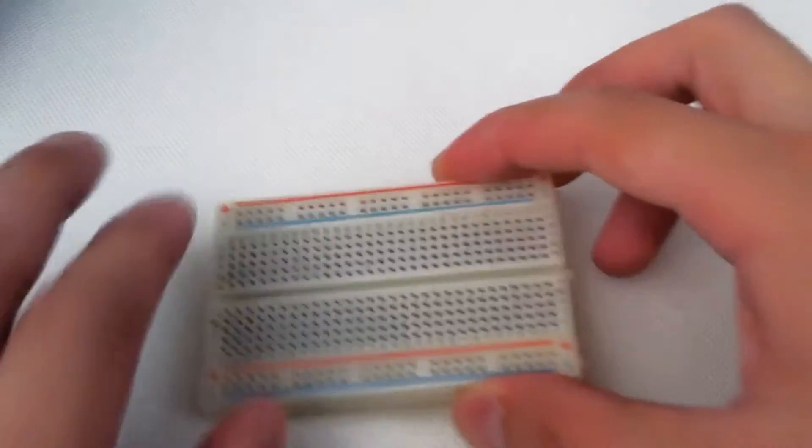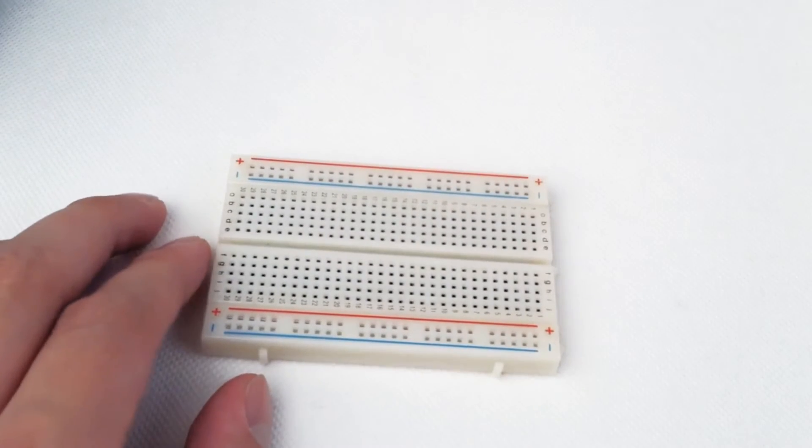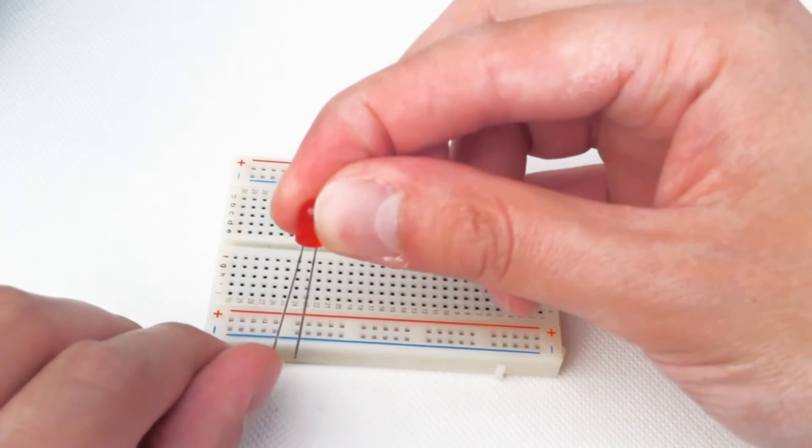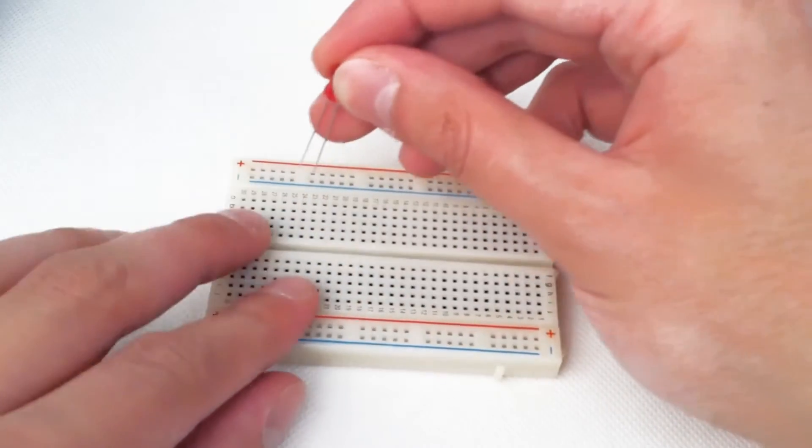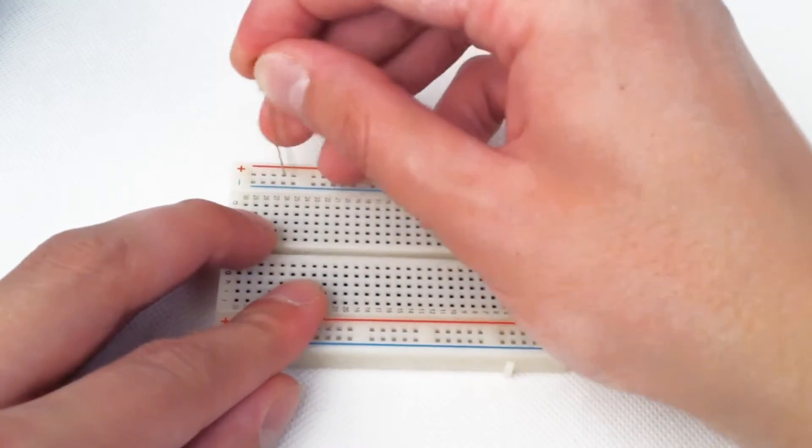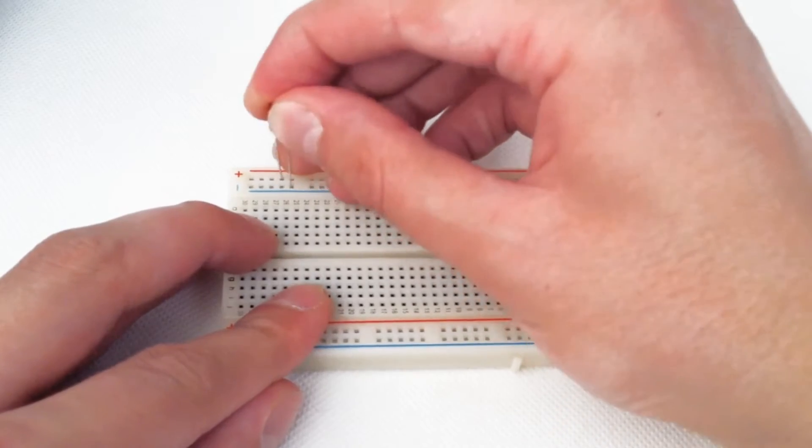Okay, let's start off with our LEDs. The longer terminal is positive, the shorter terminal is negative. Put them in separate channels so they don't mix.